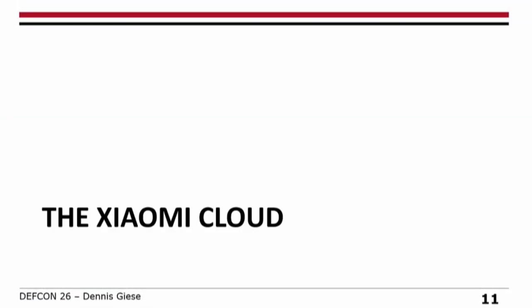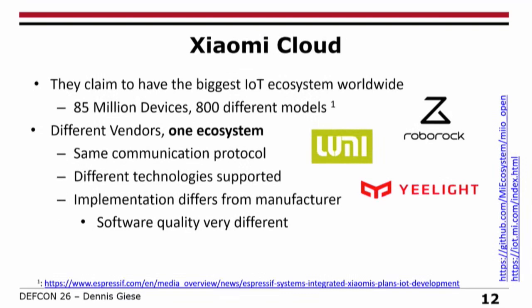Let's talk about the Xiaomi cloud. Xiaomi claims they have the biggest IoT ecosystem worldwide, with over 85 million devices and 800 different models — from vacuum cleaners, cameras, up to smart toothbrushes and smart toilet seats. Not all products labeled as Xiaomi are actually from Xiaomi; many different vendors work in this ecosystem using the same communication protocol. This cloud also supports different technologies, and the implementation is different from manufacturer to manufacturer. The software quality is also very, very different.